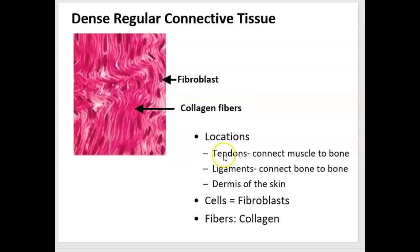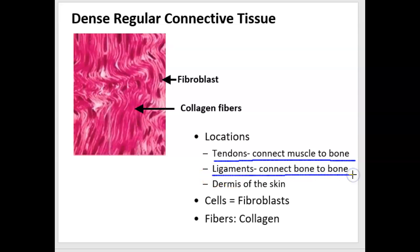Since dense regular connective tissue is found in tendons and ligaments, let me mention the difference between them. A tendon connects a muscle to the bone. Our skeletal muscles that we can consciously control — when we contract, our bones move — they're attached by tendons. Ligaments connect bone to bone, so they help keep joints in place. For example, the humerus and the ulna form a joint together, and there are ligaments that help keep them together.